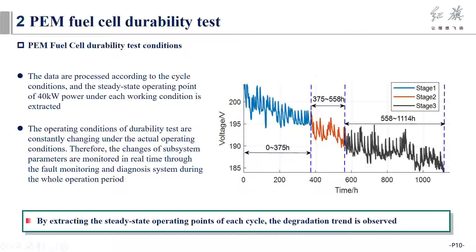The voltage degradation trend of durability tests is shown in the figure. The data are processed according to the cycle conditions and the steady state operating points of each working condition are extracted. The operating conditions of durability tests are constantly changing under the actual operating conditions. Therefore, the changes of subsystem parameters are monitored in real time.